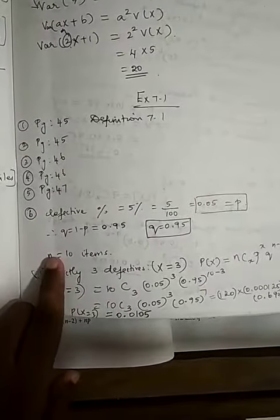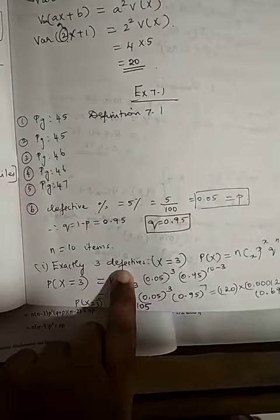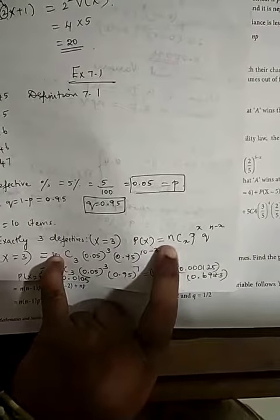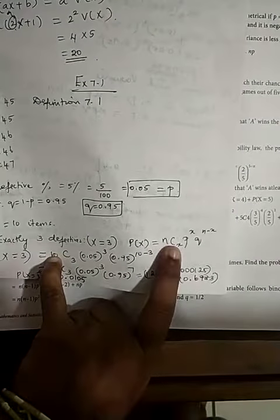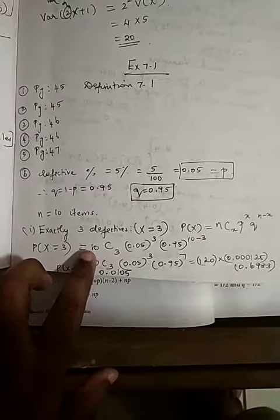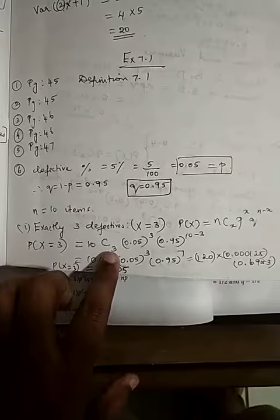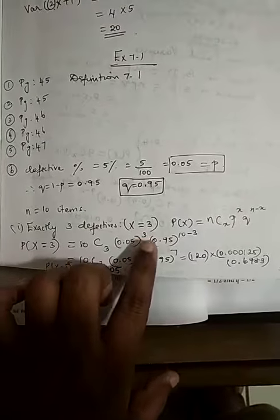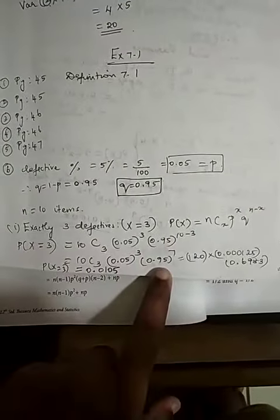The number of items is n = 10, and we want exactly 3 defectives. So P(X = 3) = 10C3 · (0.05)^3 · (0.95)^7. Using a calculator, the answer is 0.0105.